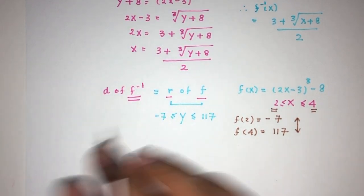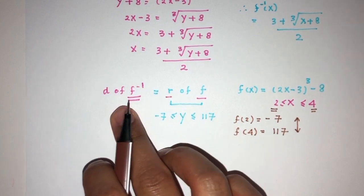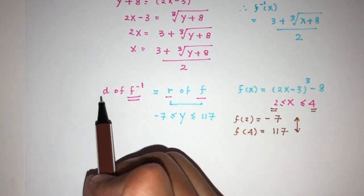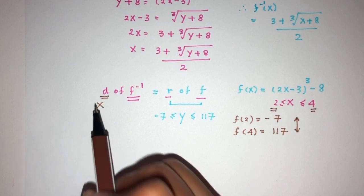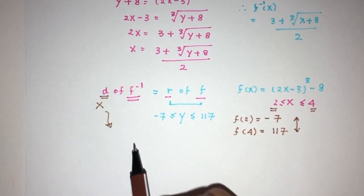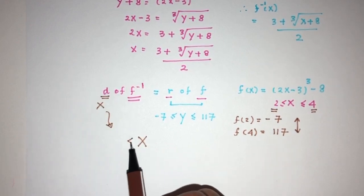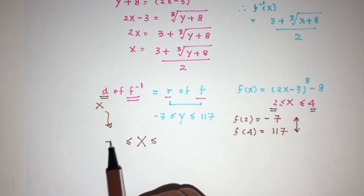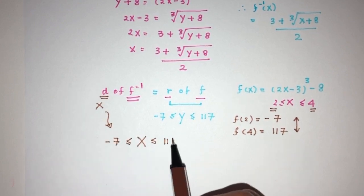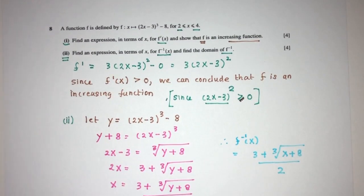Now, we have to use this to find the domain of f inverse of x. Now, domain is defined by x value, so we just have to write, pretty easy, x between the values of minus 7 and 117. And that will be the domain of f inverse for the question in relation to functions.